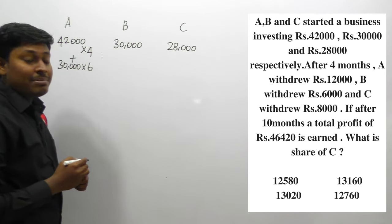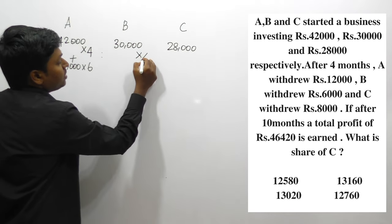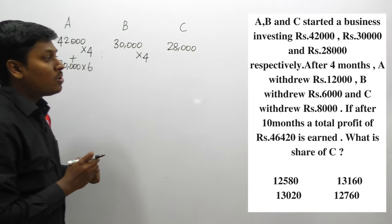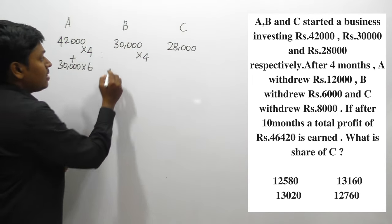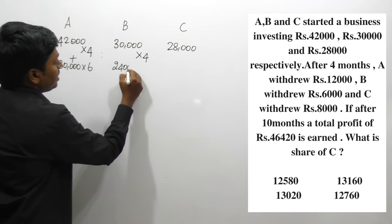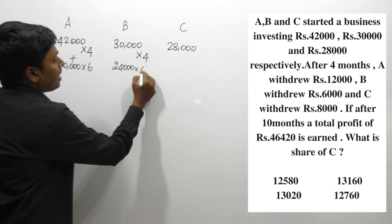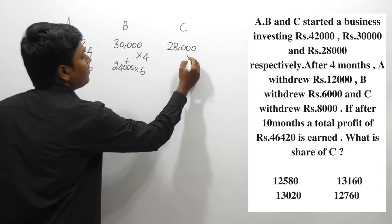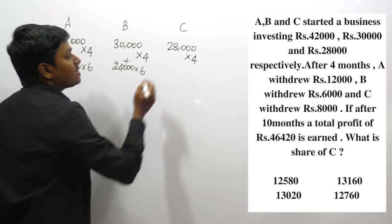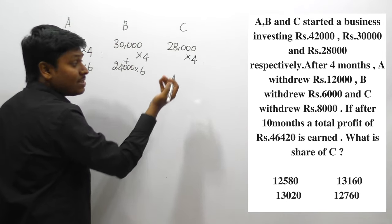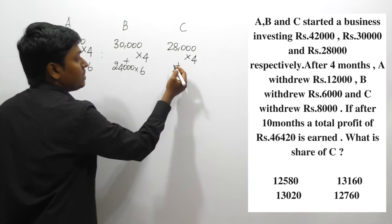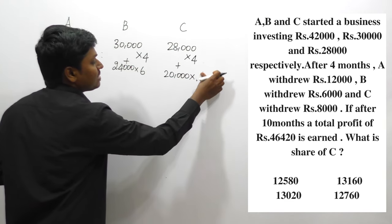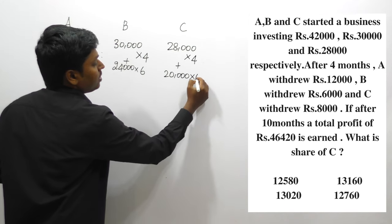For B: first 4 months B invests 30,000. After withdrawing 6,000, the remaining 24,000 is invested for the remaining 6 months. So B = 30,000 × 4 + 24,000 × 6. For C: first 4 months C invests 28,000. After withdrawing 8,000, the remaining 20,000 is invested for the remaining 6 months. So C = 28,000 × 4 + 20,000 × 6.